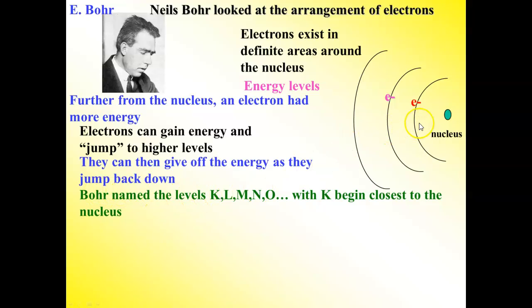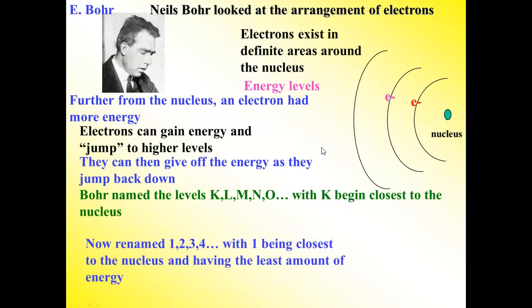Bohr named the levels originally. He called this level K, this level L, this level M. We've kind of gotten rid of that now. We actually just call these levels 1, 2, 3, 4, 5. But you have to remember that energy level 1 is closest to the nucleus, lower energy, 2 has higher energy, 3 has higher energy, and so on. So now, our atom is even more organized. Dense positive center, mostly empty space, but the electrons hang out in specific areas, and those specific areas each have their own energy associated with them. Electrons can jump from area to area by gaining or losing electrons.